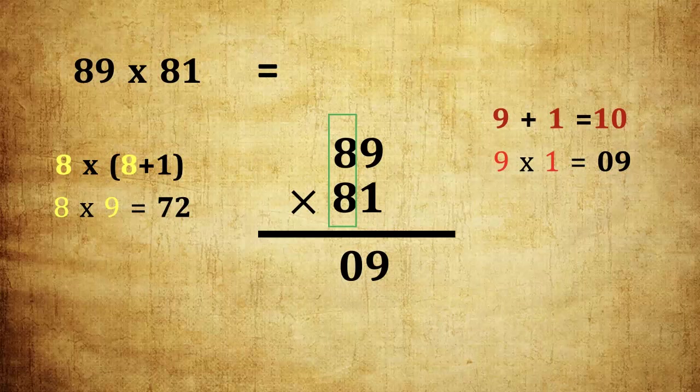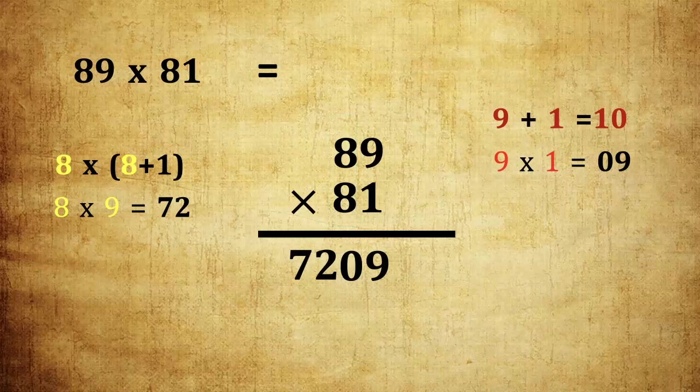It means 8 into 9 is 72. Write 72. 89 into 81 is 7209.